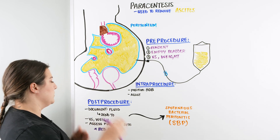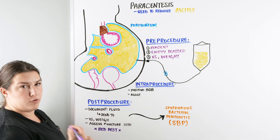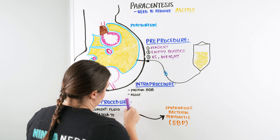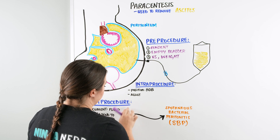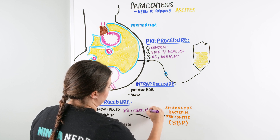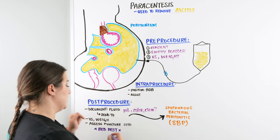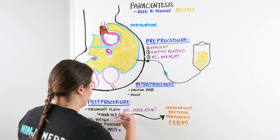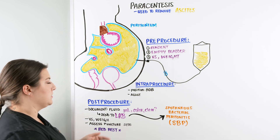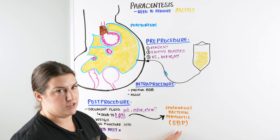Once the procedure is over, the first thing we're going to do is document the fluid. We're looking at the amount in milliliters, the color, and whether it's clear or cloudy. After documenting the amount, color, and clarity, we send the fluid to the lab. This is really important because there is a chance our patient could develop spontaneous bacterial peritonitis — SBP — which we don't want to occur because it has a high chance of mortality.